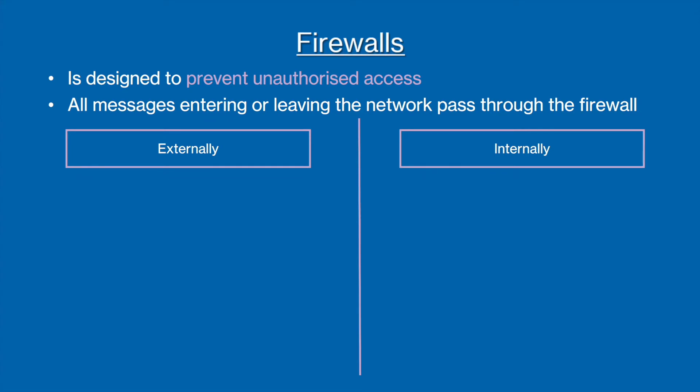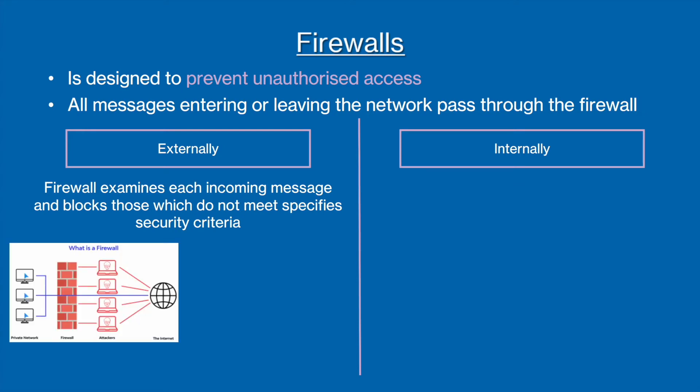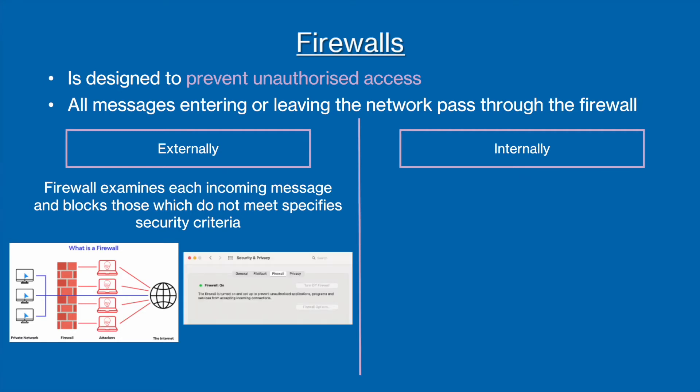The next type of security method is called a firewall, and this is used to prevent unauthorized access. It works by examining all incoming and outgoing messages, only allowing those which meet specific criteria whilst blocking those that are unwanted or dangerous. There are two main use cases for firewalls. The first is to block dangerous packets from entering the system, such as malware or phishing links. Most laptops and PCs come with an inbuilt firewall for this reason.